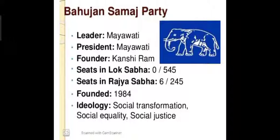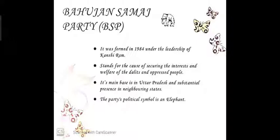The ideology of BSP includes social transformation, social equality, and social justice. You may have heard about Lucknow — there is a park full of elephant statues, built by Mayawati. The party was formed in 1984 under the leadership of Kanshi Ram, and it stands for securing the interests and welfare of Dalit and oppressed people, religious minorities, and backward classes.